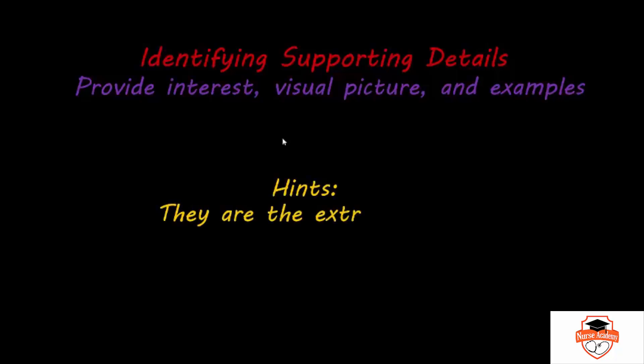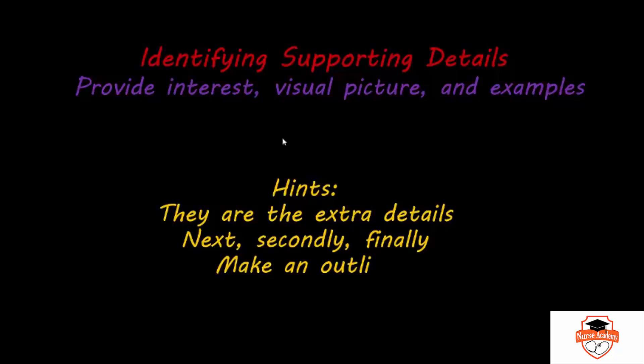First of all, you'll want to know if they are the extra details about the main idea. Also, to identify these, you can look for supporting words such as next, secondly, and finally to help find those supporting details. Lastly, make an outline. What is the big topic? And then what you want to do is list different ideas within the paper about that main topic. And those different ideas about the main topic are your supporting details.